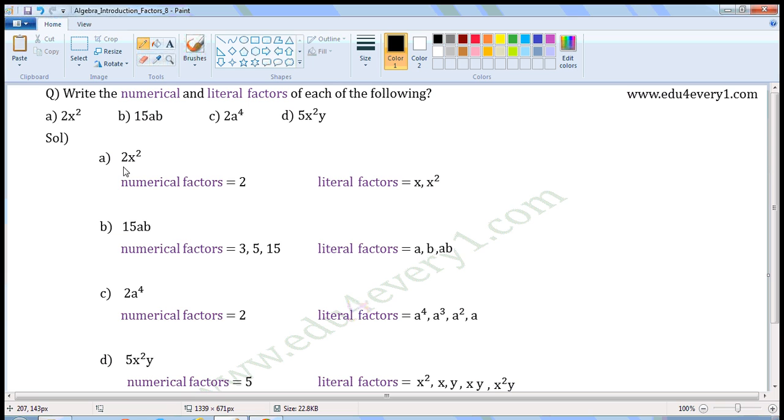In this, the numerical coefficient is 2. And 2 is a prime number. So, numerical factors is equal to 2. Literal coefficient is x square. Its factors are x and x square. So, literal factors are x, x square.